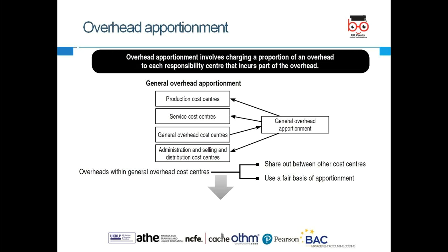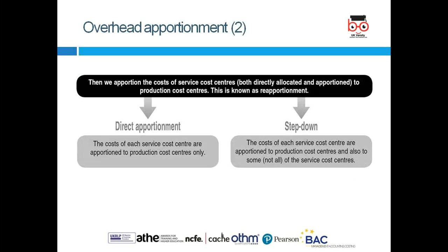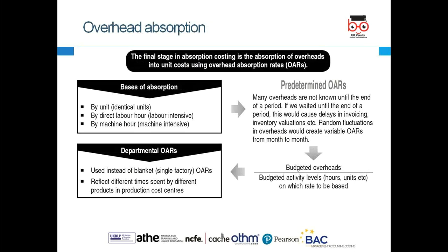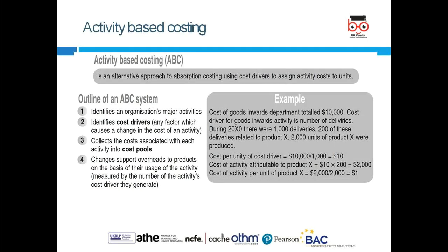Overhead apportionment divides production costs between production cost centers and service cost centers. Think of a manufacturing organization with different departments — a warehouse and various service departments. You decide the basis for allocating cost: direct apportionment, or using a budgeted rate divided by budgeted activity. For example, a canteen provides 40% of services to admin staff and 60% to production, so costs are allocated by those percentages.